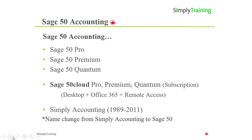Before we begin to review the differences in the Sage 50 programs, let's briefly go over the naming conventions of the Sage 50 programs and a little history. This helps in being knowledgeable when hearing the Sage 50 name and to decipher which Sage 50 program it is. As stated earlier, there are three levels of Sage 50: Pro, Premium and Quantum. These are the three core products.